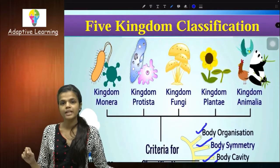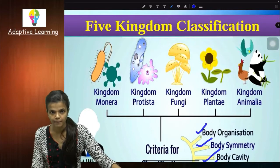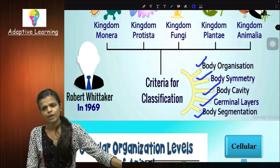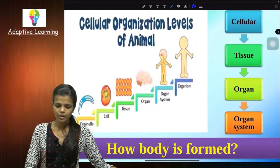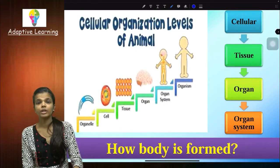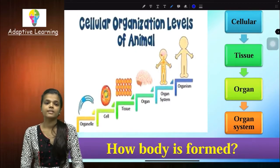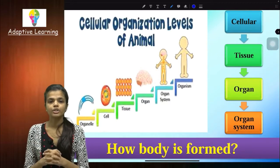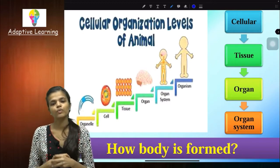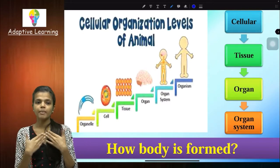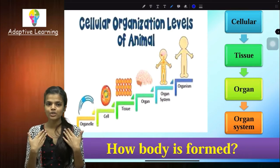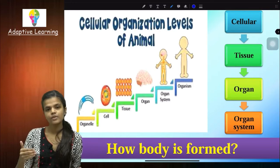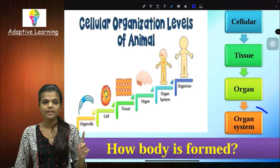We are now in Kingdom Animalia. Let's start. What was the first criteria? Body organization — how your body is organized. Cells, then cells form tissue, tissue forms organ, and then when coordination happens with organs we are the result of an organ system.